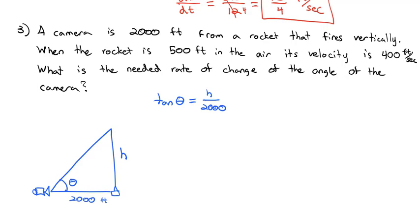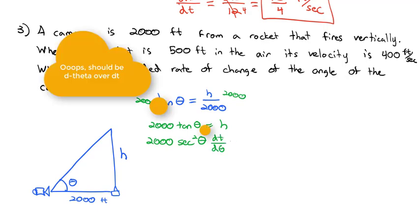Let's take the derivative. First, let's multiply both sides by 2,000 to avoid the fraction — it's just a constant. Now taking the derivative, using implicit differentiation: 2,000 secant² of θ times dθ/dt equals dh/dt, the derivative of the height.